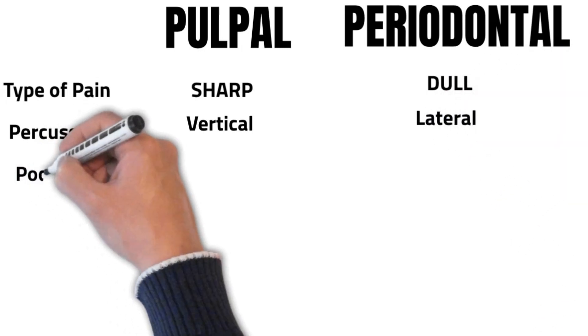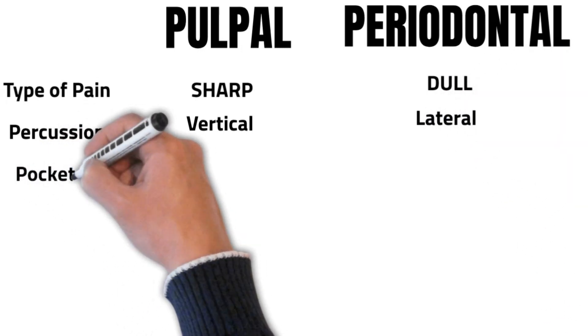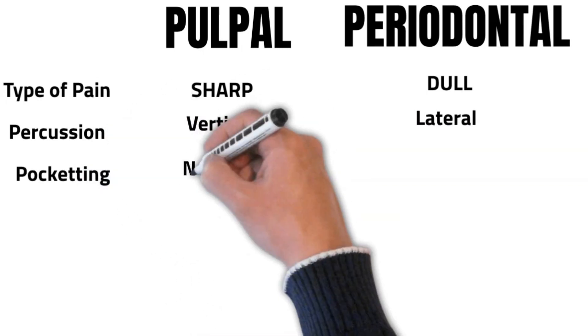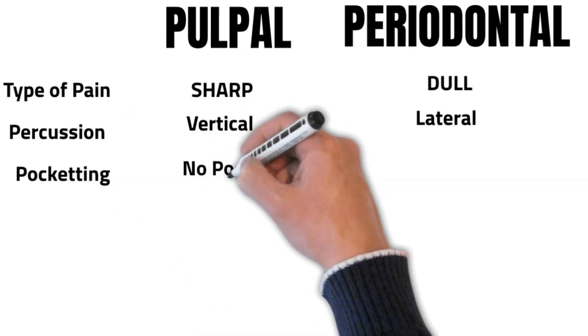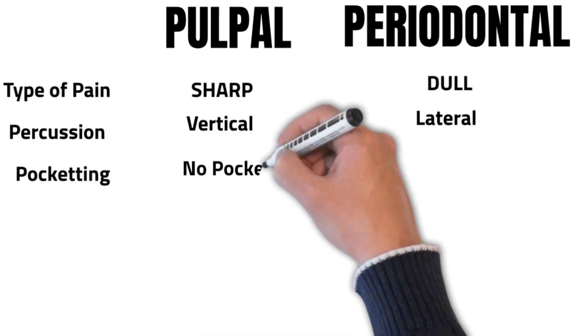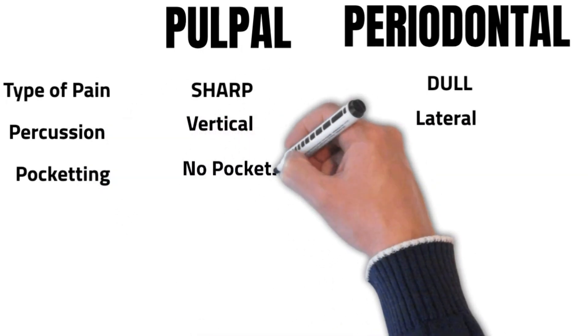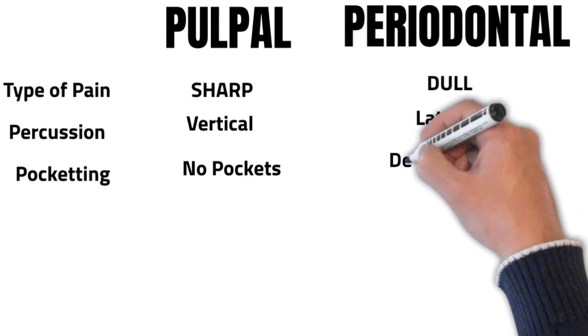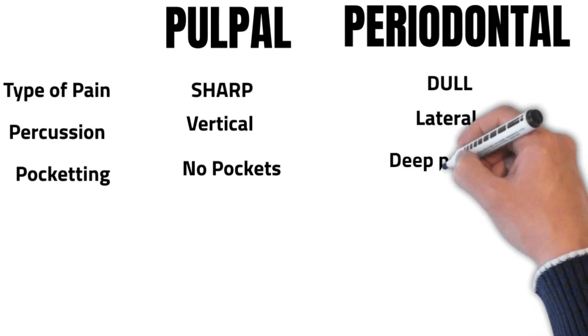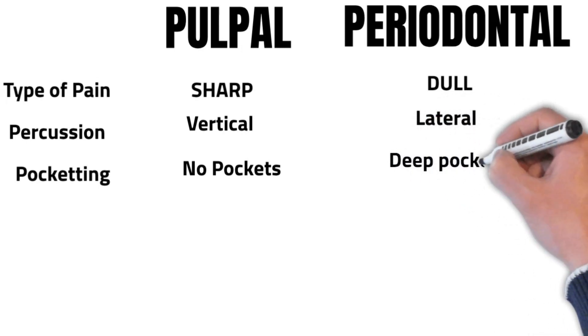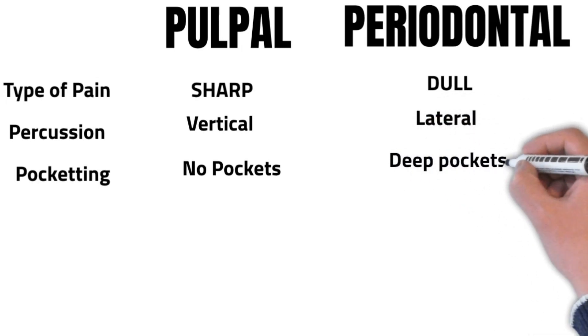When you probe the gums around the tooth, in pulpal pathology there's usually no pockets, whereas in periodontal pathology there will be pockets present.